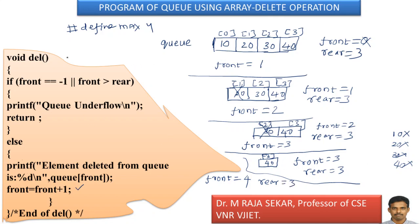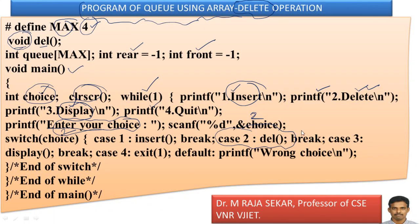That last element 40 is also deleted. Now if you want to delete again, let me say this function is called. Front equal to equal to minus 1: 4 cannot be minus 1, so false. Front greater than rear: 4 greater than 3 — it's true. Therefore, you will enter inside the if block and a message will be displayed: Q underflow. It means if you are interested in removing or deleting elements but elements are not present, that situation is known as Q underflow. Return means you will go back. After del, there is a break statement — break means you will come out of switch, and again you go back to the while loop. If I enter number 4, that means case 4: exit 1. With this function, we will come out of the program. Thank you very much.